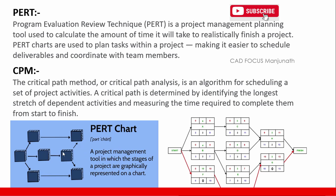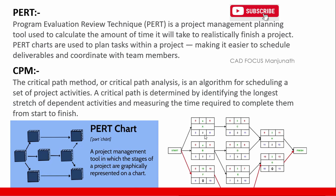CPM, or Critical Path Method, also known as Critical Path Analysis, is an algorithm for scheduling a set of project activities. The critical path is determined by identifying the longest stretch of dependent activities and measures the time required to complete them from start to finish. You can check the remaining videos on my channel to learn more about these topics in depth, including a full Primavera basic course.